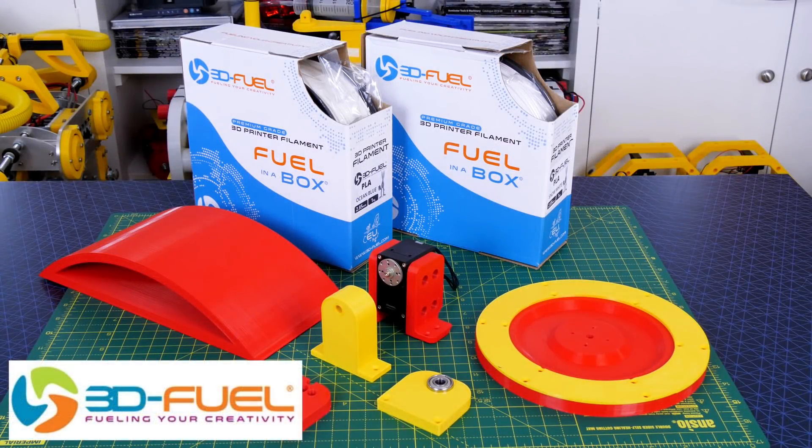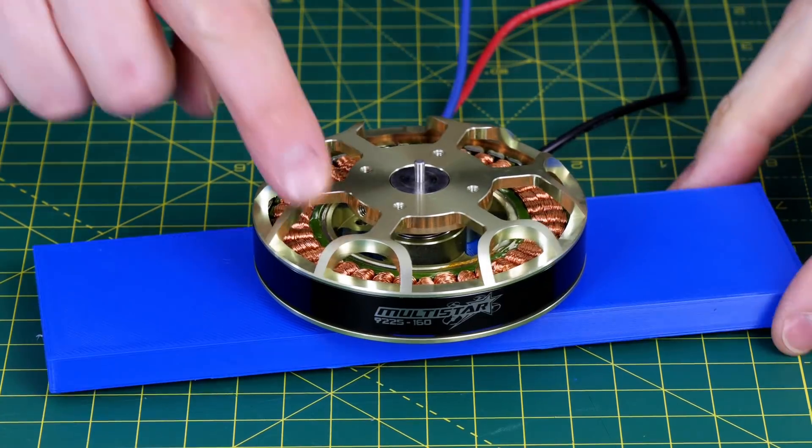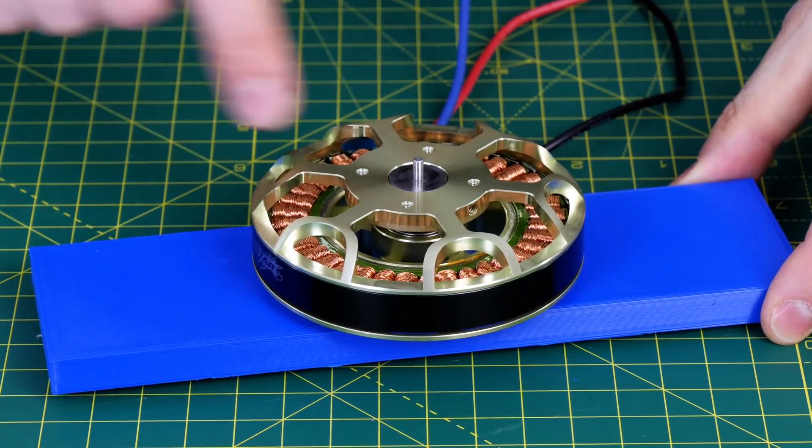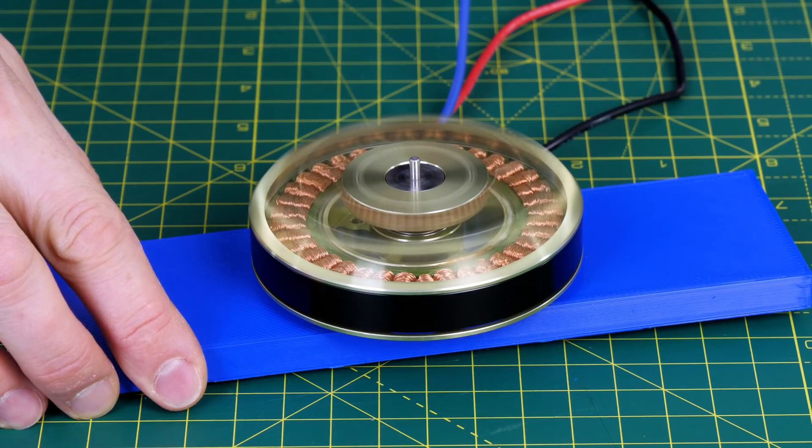Thanks to 3DFuel for the filament for this project and lots of other projects, so check out my channel for more 3D printing projects and check out 3DFuel.com. I'm using a brushless motor which is 160kV and it's a 9225 motor, so a fairly big one. And we're going to use this motor to spin up the gyro.